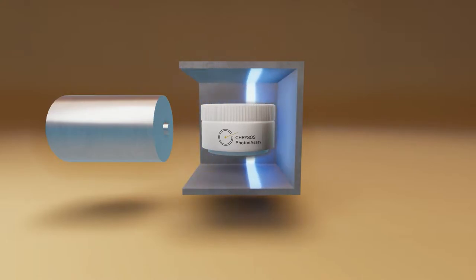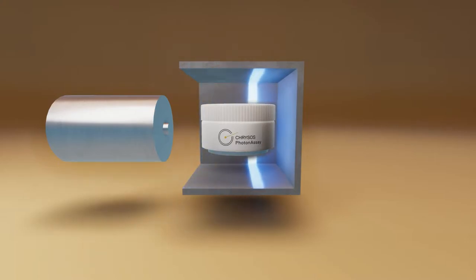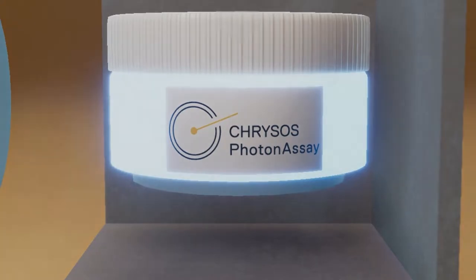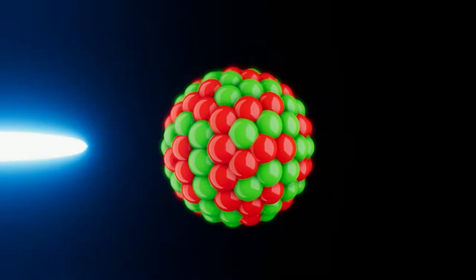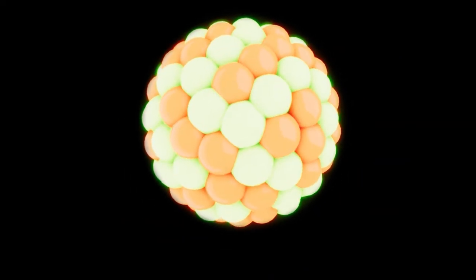Activation of the atoms in each sample is achieved via a High Energy Linear Accelerator X-ray Source, or LINAC for short, that produces no radiation when not powered on. The High Energy X-rays induce nuclear changes in any gold atoms present in the sample, exciting their atomic nuclei into a short-lived state known as an isomer.